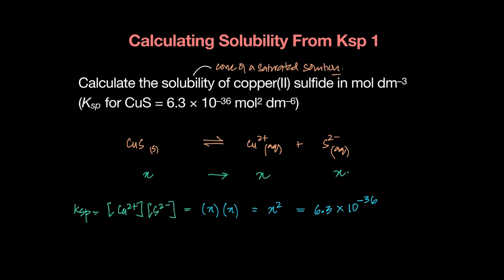And this will literally give you the value for X, which is the solubility. So if you take the square root of this, you get 2.51 times 10⁻¹⁸ moles per dm³.